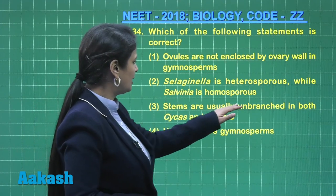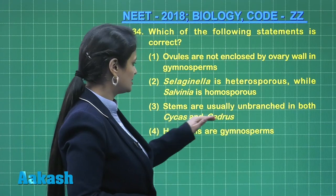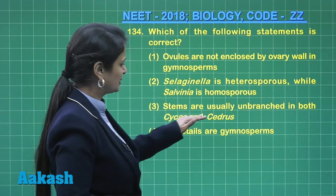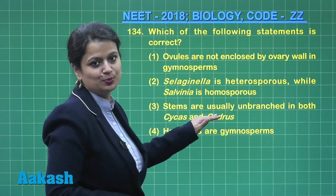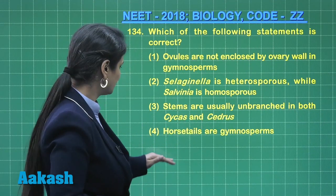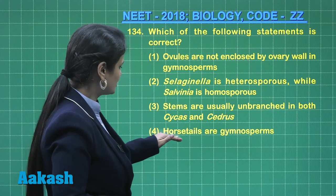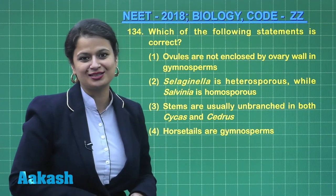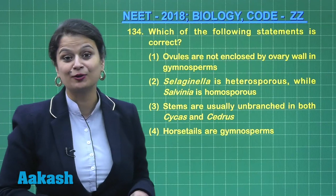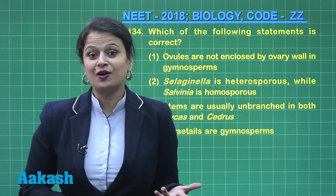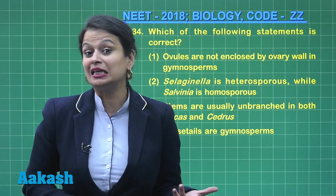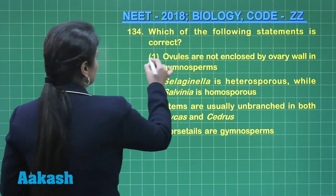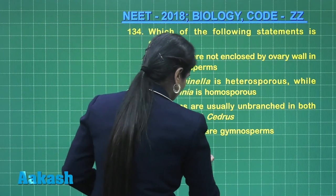Stems are usually unbranched in Cycas and Cedrus — it is unbranched in Cycas but in Cedrus it is branched, just like Pinus. Horse tails are gymnosperms — no, horse tails are not gymnosperms. They are members of pteridophytes, and one good example is Equisetum. So the right answer here is option number one.